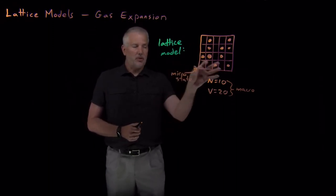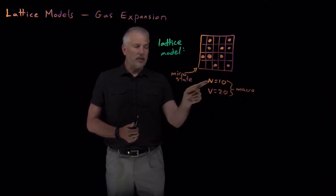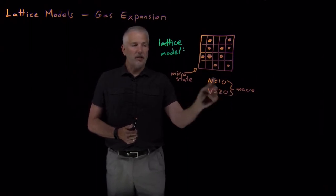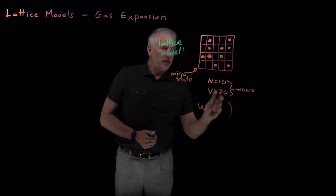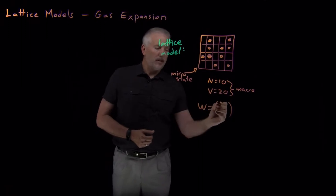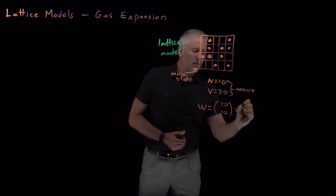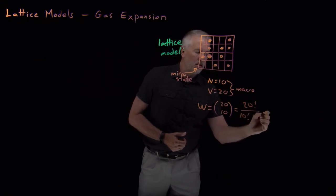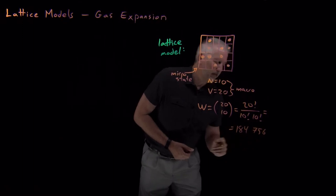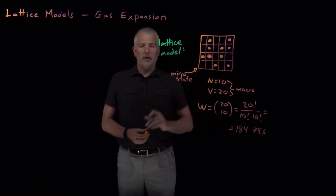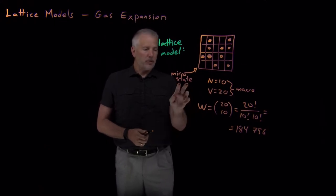The macrostate is described by putting 10 molecules into 20 grid positions — that's a valid configuration. If I tell you the number of molecules and the volume, I've described the macroscopic properties. If I tell you where every individual molecule is, I've described the microscopic properties. We can calculate the number of microstates consistent with this macrostate: choosing which 10 of 20 boxes to occupy gives exactly 184,756 different configurations.